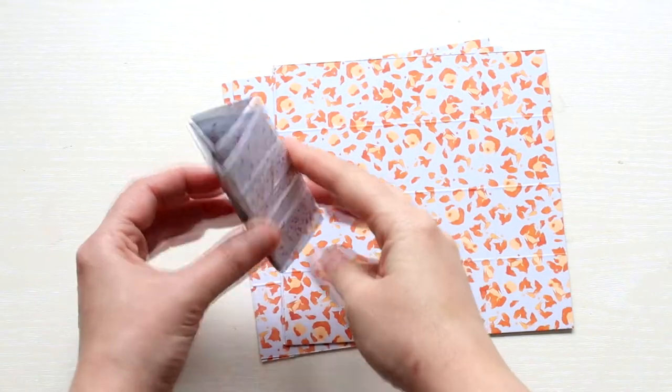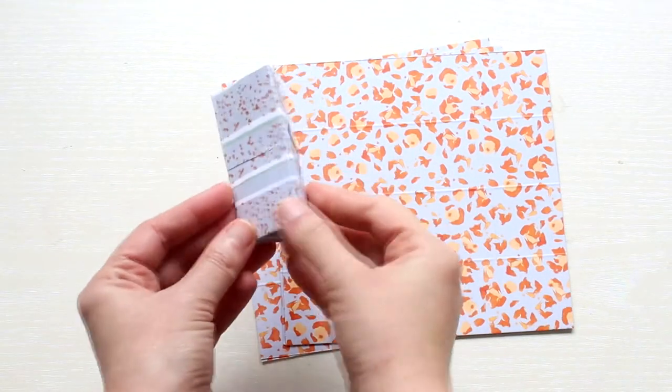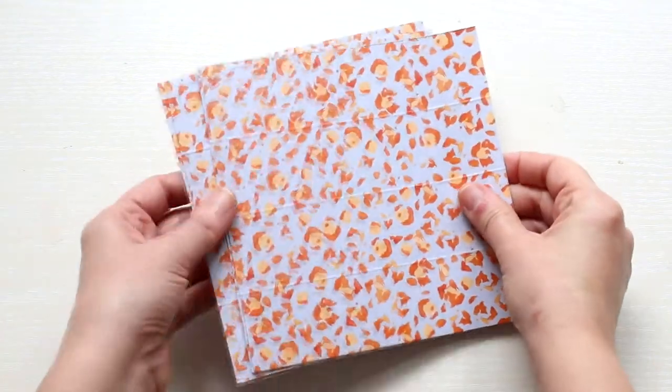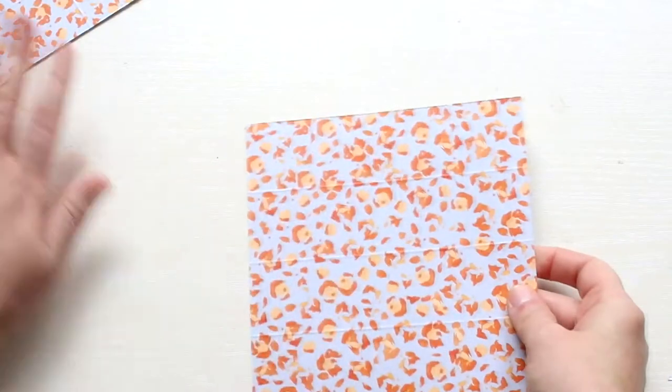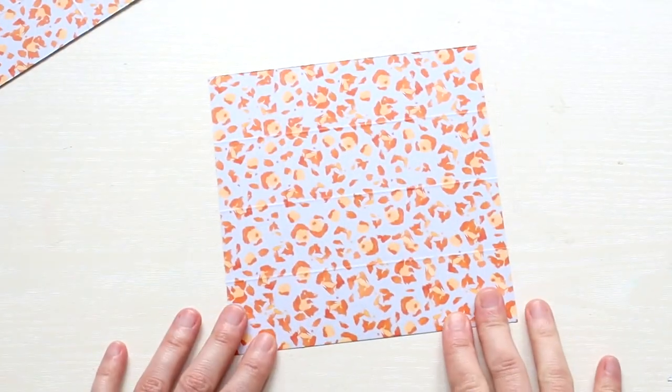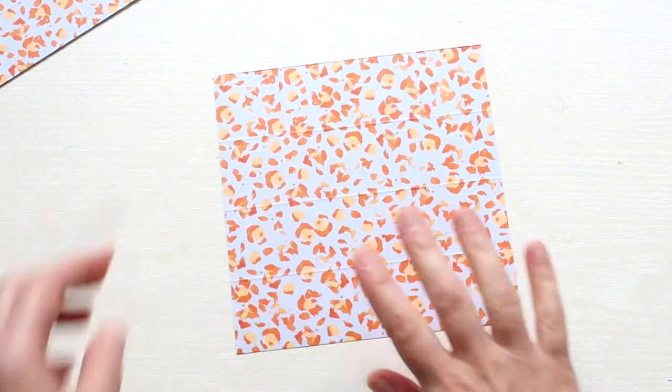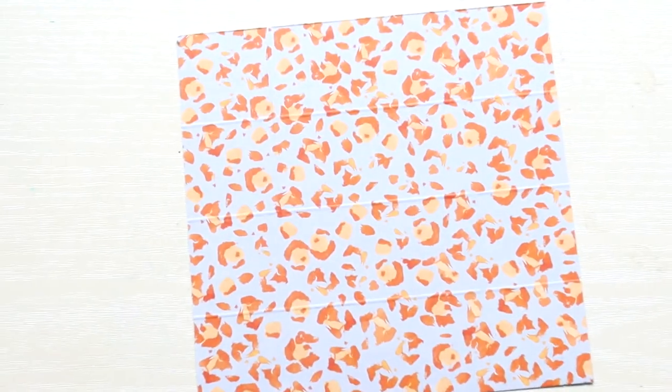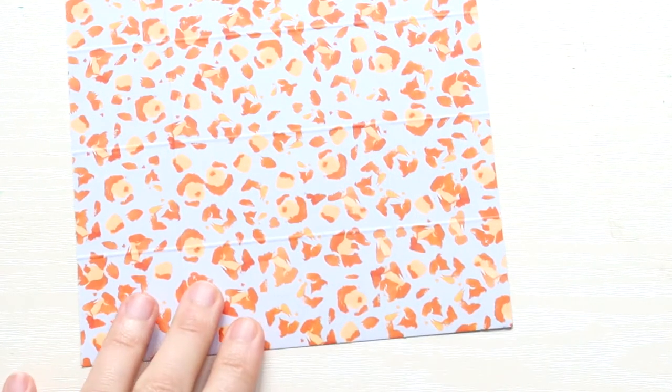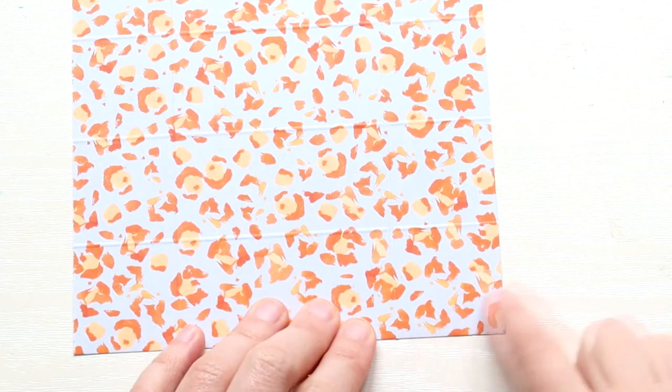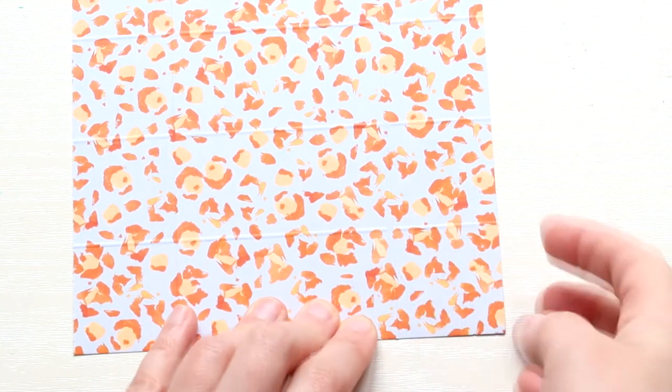Now we need to create this sort of triangular shape. In order to do so you need to take your scored paper and fold the corners. So you will fold all four corners towards the intersection of the score lines.